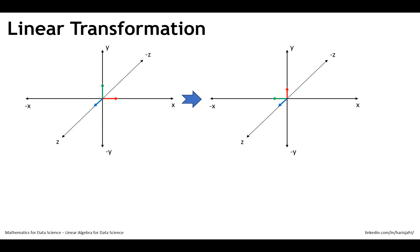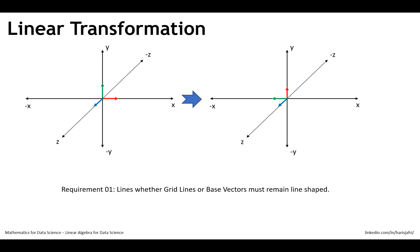We have now put both scenarios side by side — one before transformation and one after transformation. However, there are some requirements this transformation must comply with in order to be called a linear transformation. Requirement number one is that lines must remain lines — grid lines or basis vectors must remain line-shaped. As of now this one is correct; the lines are lines in both scenarios, before and after transformation. However, this other example is wrong because the y-axis has become sort of an arc.